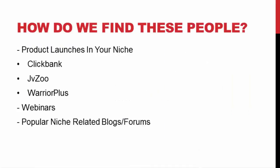How do we find people with a huge email list in our niche? There are multiple ways. Product launches — every niche has people launching information products. You can head over to ClickBank.com, JVZoo, Warrior Plus, or any affiliate network and search for products, especially ClickBank since they have products in every niche. Contact these people and see what it would take for them to send out your email. You can also find people doing webinars, blogs, or forums related to your niche.